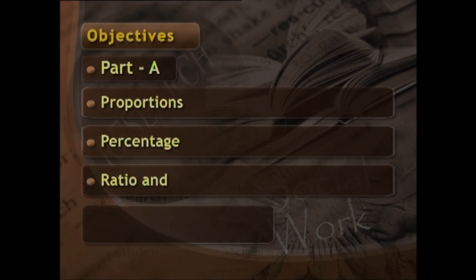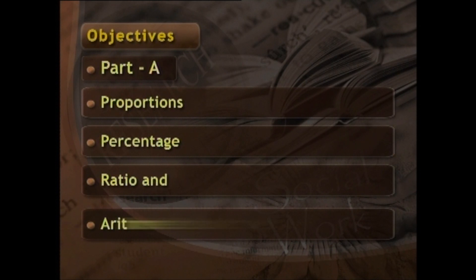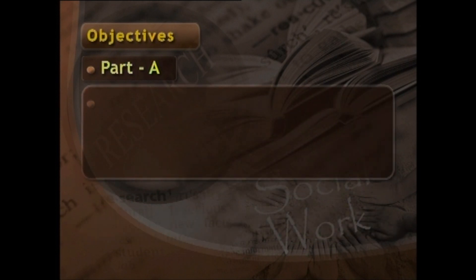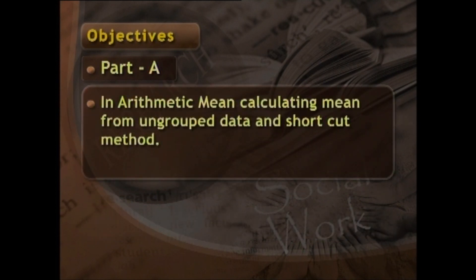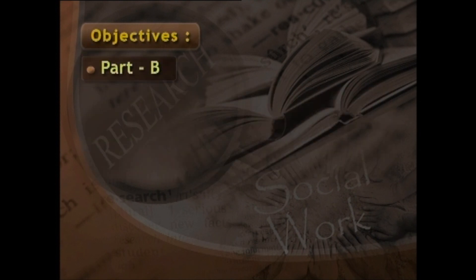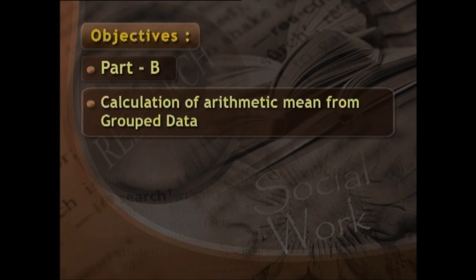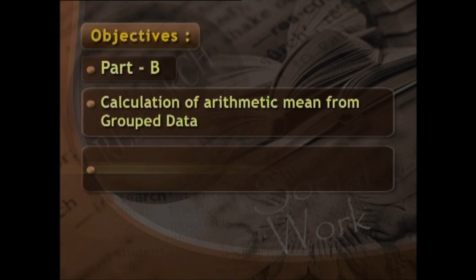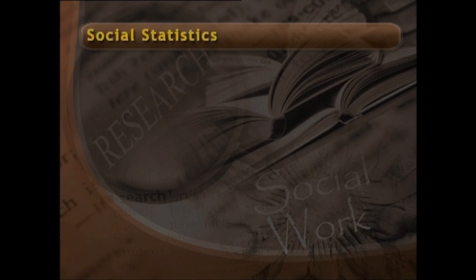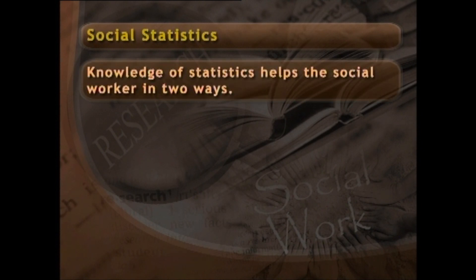In part A we also cover ratio and arithmetic mean, including calculating the mean from ungrouped data and the shortcut method. In part B we will learn about calculation of arithmetic mean from grouped data, calculating median and mode.